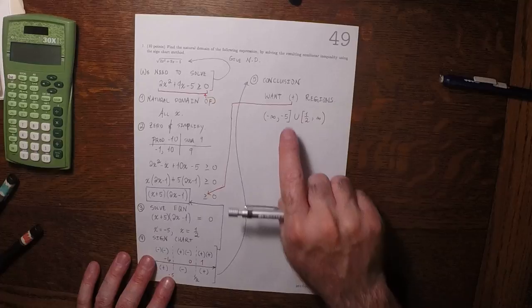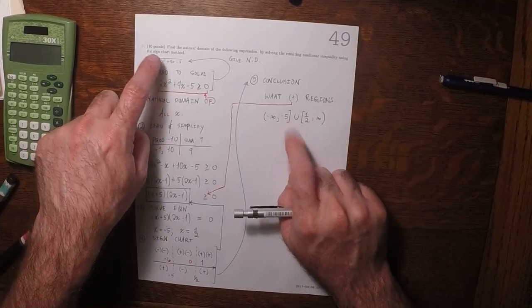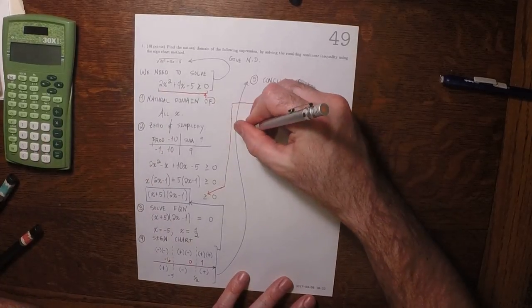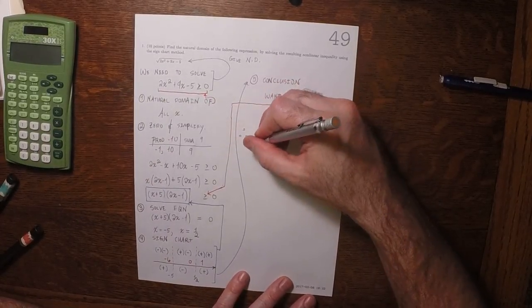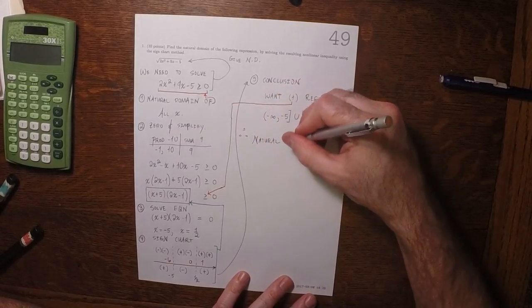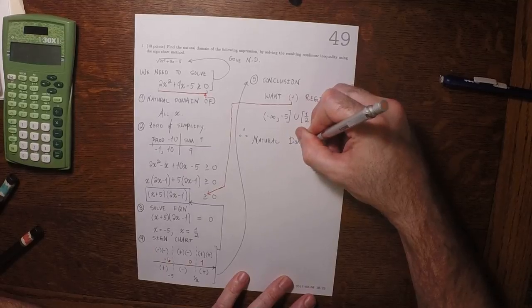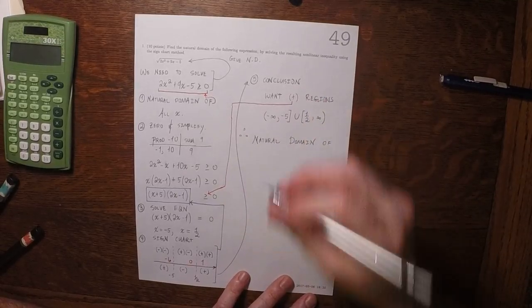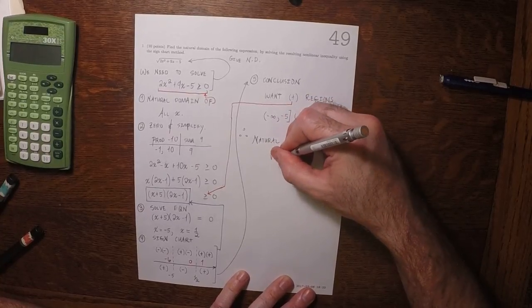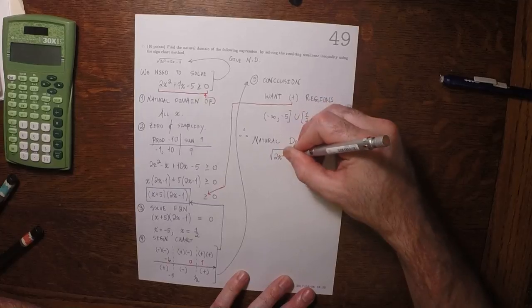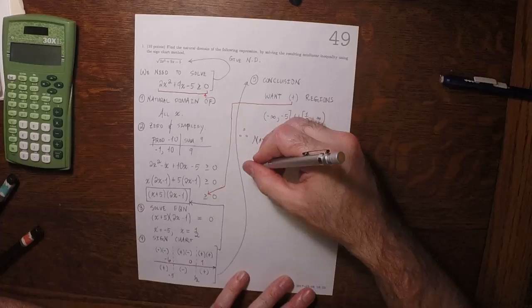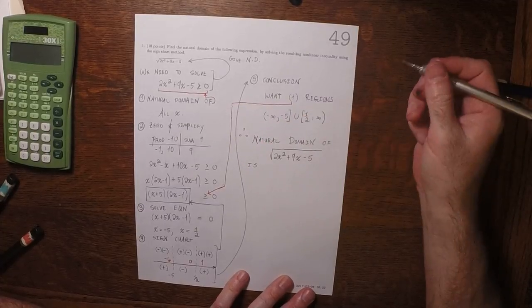So what that's saying is that this expression can be evaluated, the original expression. Therefore the natural domain of square root 2x squared plus 9x minus 5 is that's it.